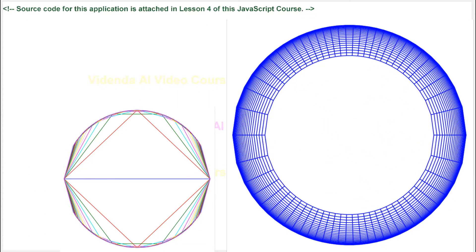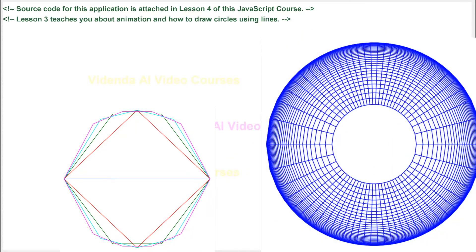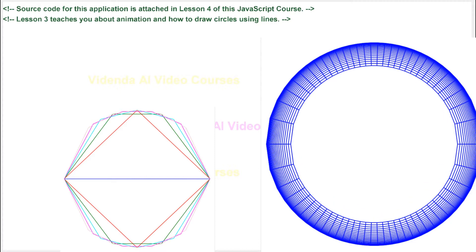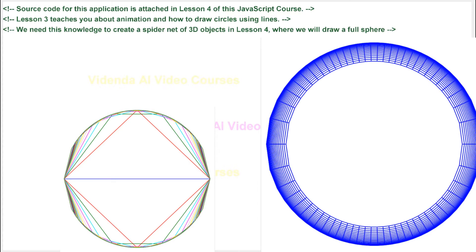Source code for this application is attached in Lesson 4 of this JavaScript course. Lesson 3 teaches you about animation and how to draw circles using lines. We need this knowledge to create a spider net of 3D objects in Lesson 4, where we will draw a full sphere.